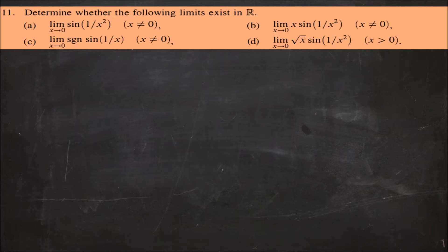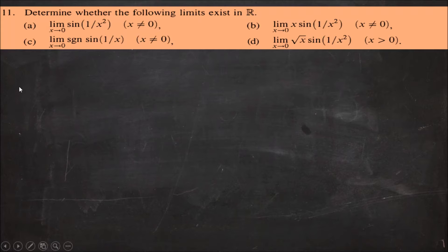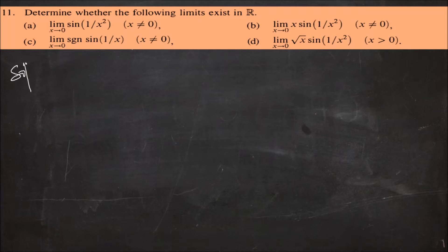Welcome everyone. I am Dr. Rajesh Singh, and in this video we will solve question number 11 to question number 15 of Exercise 4.2 of the book Bartle and Sherbert. In my previous videos I have solved question number 1 to 10. So let's start with question number 11, where we have to determine whether the following limits exist in each case, parts a to d.